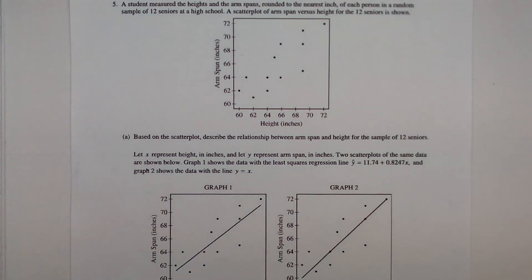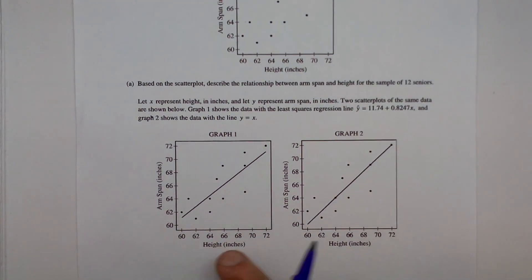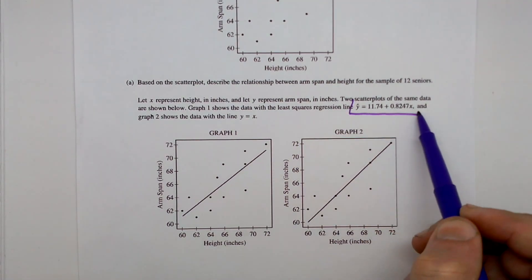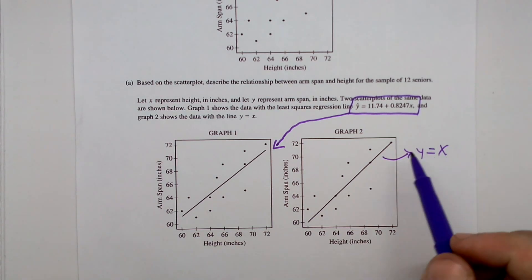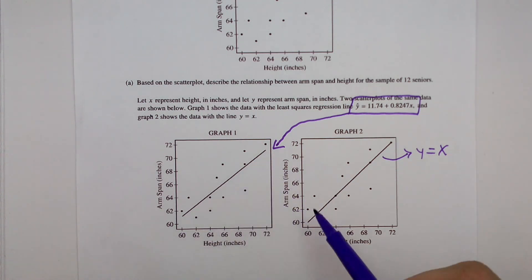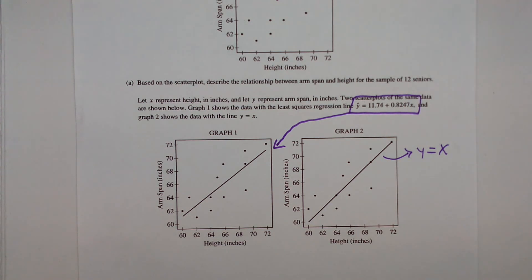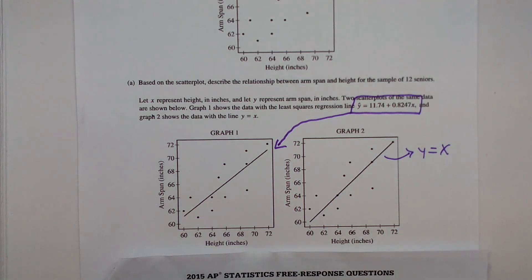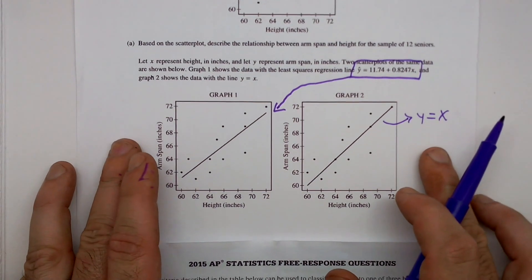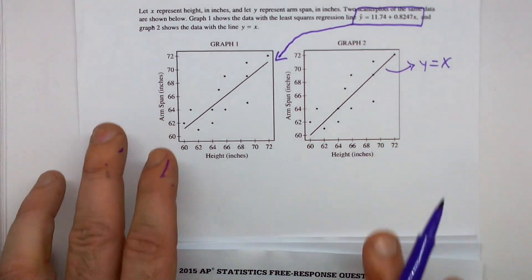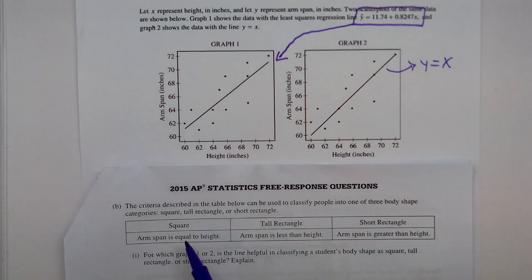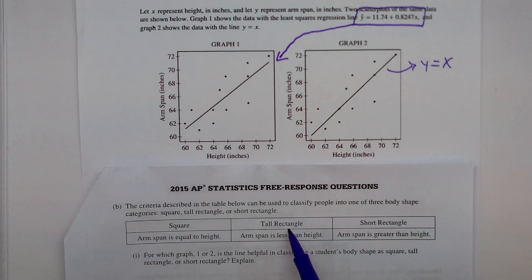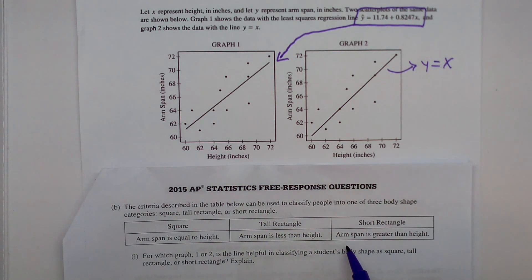Part B asks us to analyze two graphs. Graph one shows our regression line graphed here, and graph two simply graphs the equation y equals x. We are asked to describe each person in the scatter plot: are they square (arm span equals height), a tall rectangle (arm span less than height), or a short rectangle (arm span greater than height)?